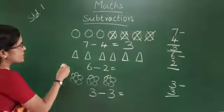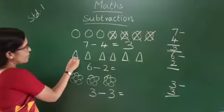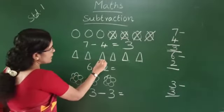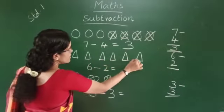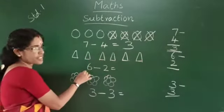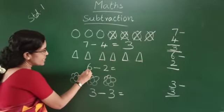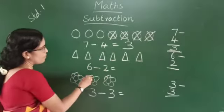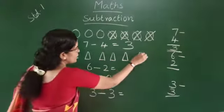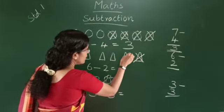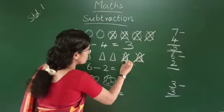Next step. 1, 2, 3, 4, 5, 6. 6 triangles. 6 minus 2. We cross out 2 triangles.